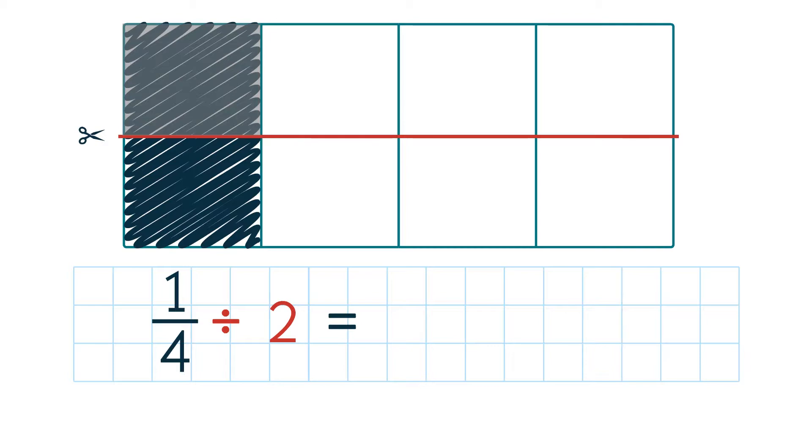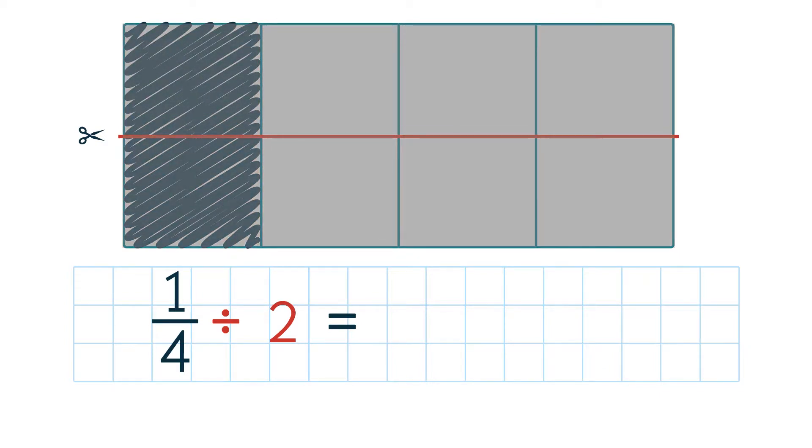As you can see, instead of 4 equal parts, now we have 8 equal parts, because we divided. So half of the shaded region is 1 8th.